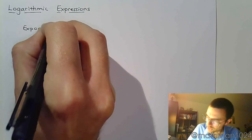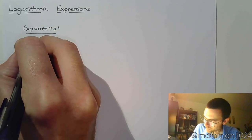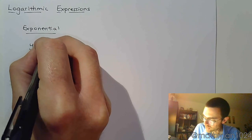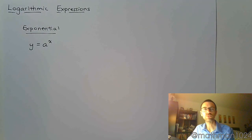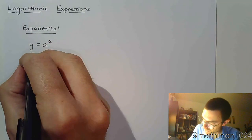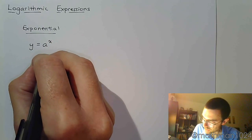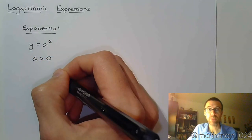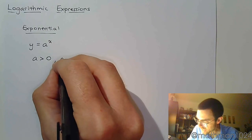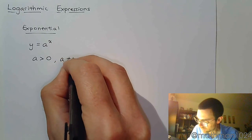We saw something that was of the form y equals a to the x, and we made certain restrictions on this. We said that a has to be positive and a cannot equal 1.